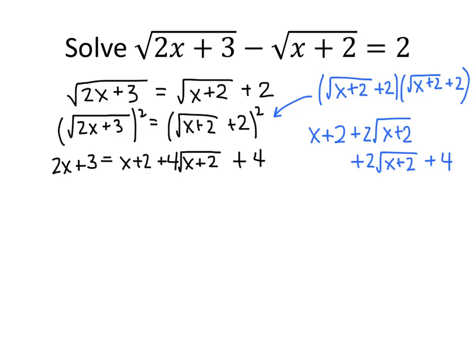So we still have a square root, but things are at least slightly better. We used to have 2 square roots, now we only have 1 square root. So we're going to have to square both sides again, but don't do it just yet. Let's isolate that square root by itself. So what we're going to do is subtract x from both sides, and then subtract 2 and also subtract 4 from both sides. That's the same as subtracting 6 from both sides. So what we end up with is x minus 3 equals 4 times the square root of x plus 2. We could also divide both sides by 4 here, but it's not really necessary. So let's just square both sides.